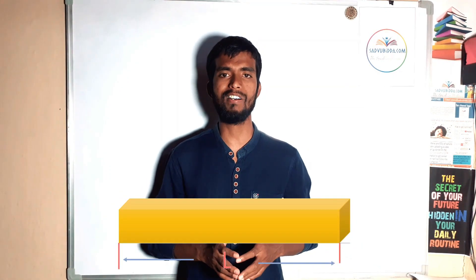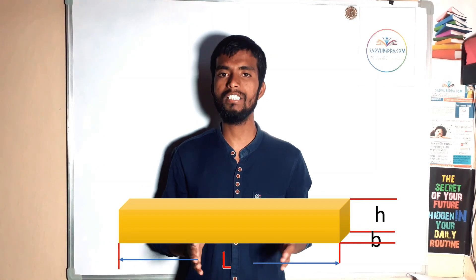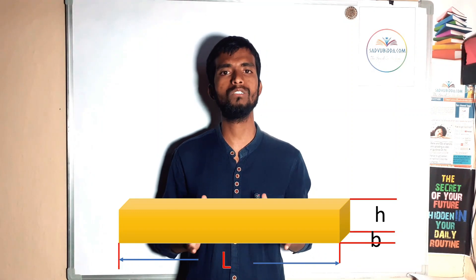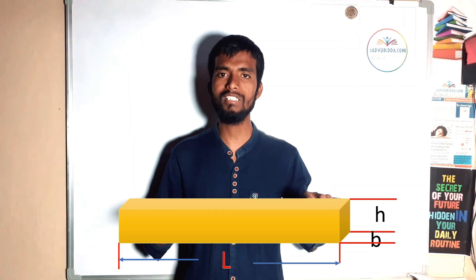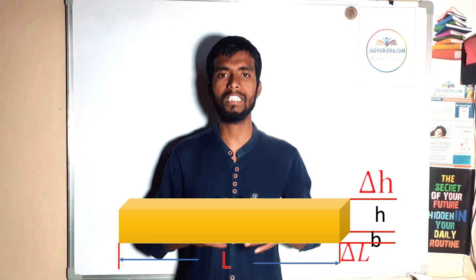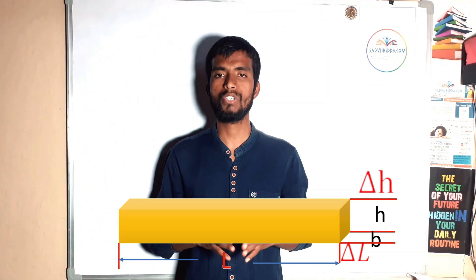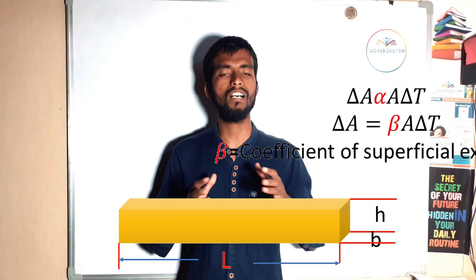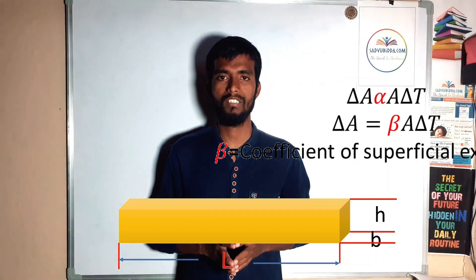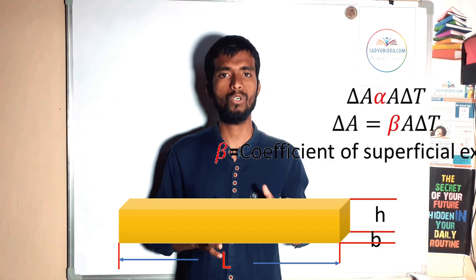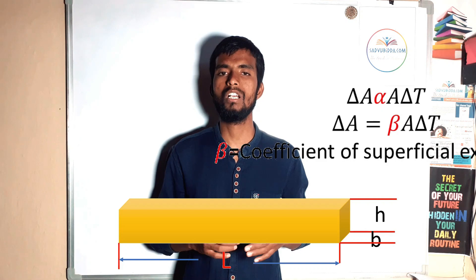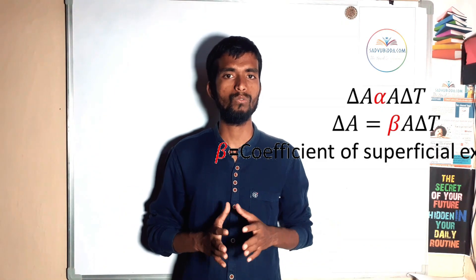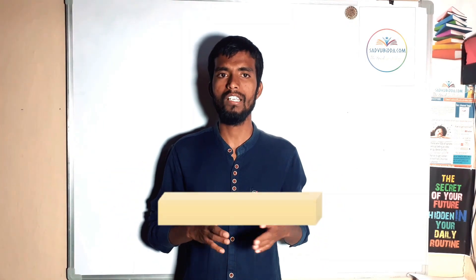Now let us discuss superficial expansion. Consider a rectangular block of height H, length L, and width B. If there is a change in any two dimensions of this block due to heat, it is known as superficial thermal expansion. The change in area delta A is directly proportional to the original area A and the change in temperature delta T. To remove this proportionality, we introduce a constant beta, which is known as the coefficient of superficial expansion.